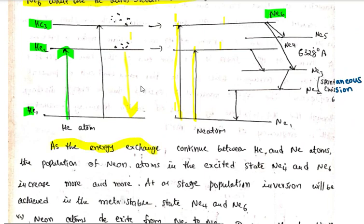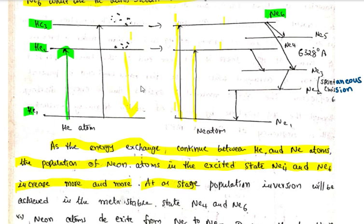As the energy exchange continues between helium and neon atoms, the population of neon atoms in the excited states neon-4 and neon-6 increases more and more. Eventually, the stage of population inversion is achieved at the metastable states neon-4 and neon-6, where more atoms are in the excited state than in the ground state.